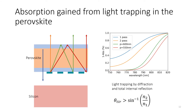Looking more closely at what we can gain from light-trapping in the perovskite cell: with one pass through the perovskite, a lot of light near the bandgap is not absorbed. With a mirror — two passes — we already increase absorption. Adding a grating, here 550 nanometers, the reflected light is redirected at an angle and trapped in the perovskite via total internal reflection. It is important that the grating periodicity is chosen such that it is outside the total internal reflection cone — only then can we exploit total internal reflection to trap light.